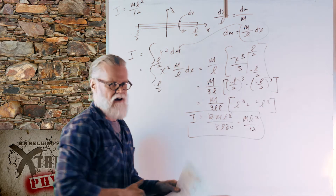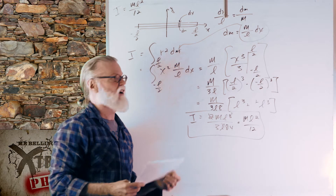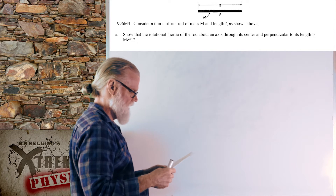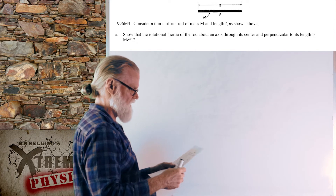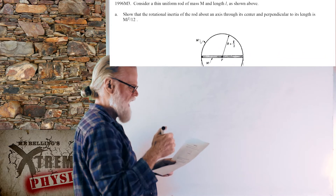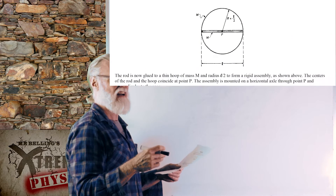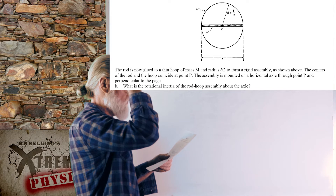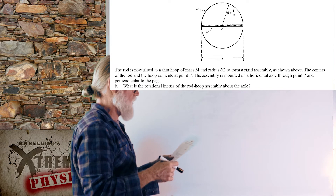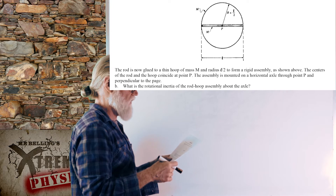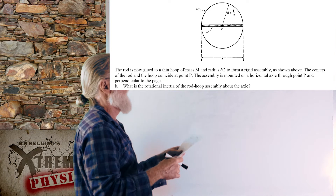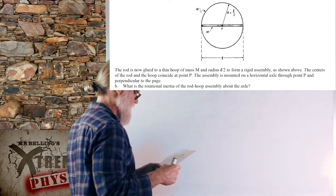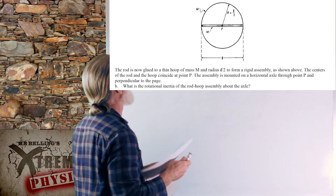That's what they asked us to show — the moment of inertia of a rod rotated about its center is ML squared over 12, and you should know how to derive it via integration. Now the problem takes the rod and glues it inside a hoop of radius L over 2. The center of the rod and the hoop coincide at point P, and the assembly is mounted on a horizontal axle through point P, perpendicular to the page — so it spins like a wheel.